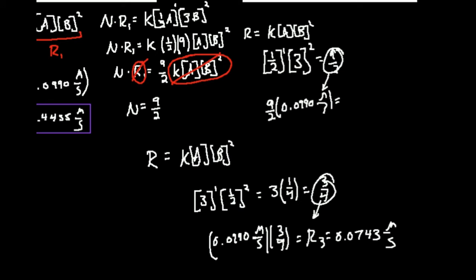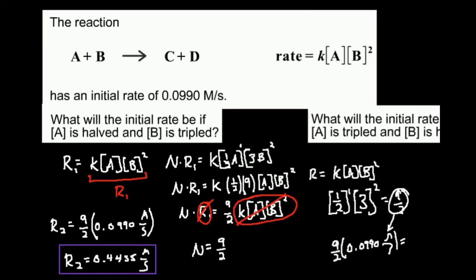So that's how to figure out these quantities. Given the rate law, if you know by what factor you're increasing a particular reactant — like tripling A, plug 3 in for A; halving B, plug 1/2 in for B — apply the exponents to each, multiply the results together, and that factor times the initial rate gives you the new rate. Make sure to like this video and subscribe to the channel for future videos and notifications. Thank you.